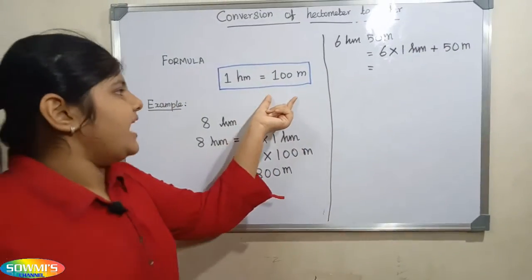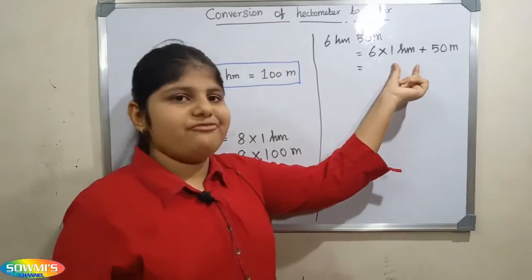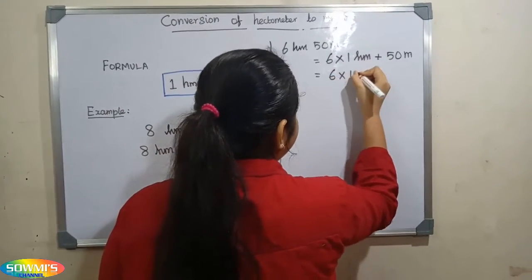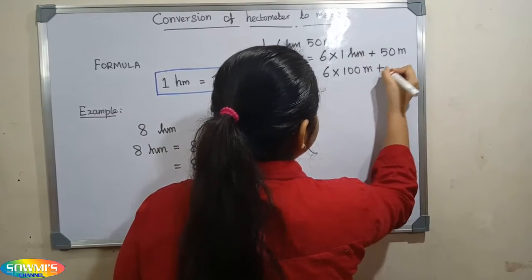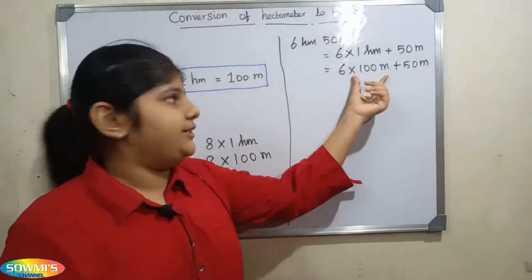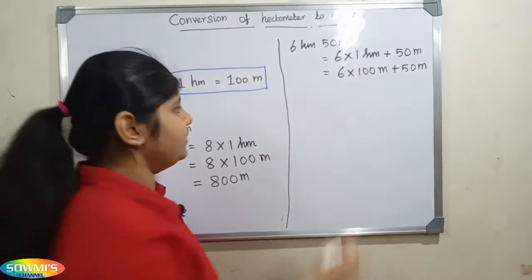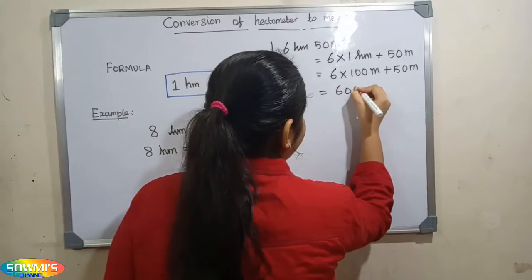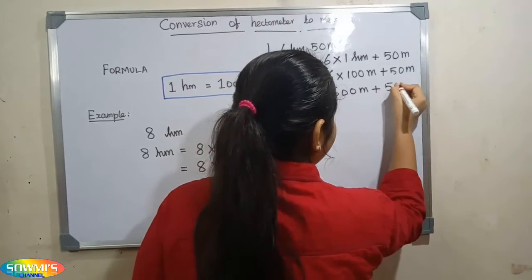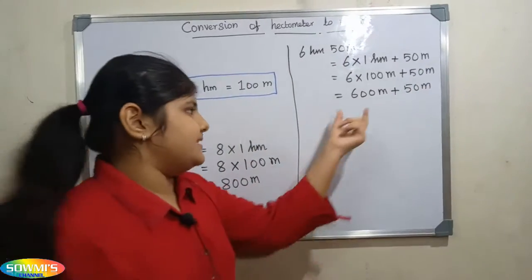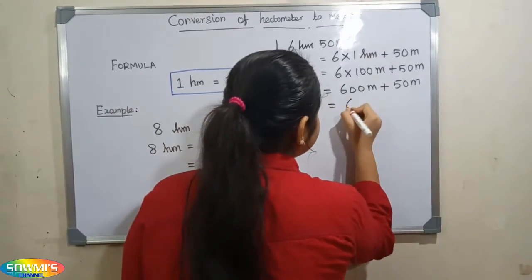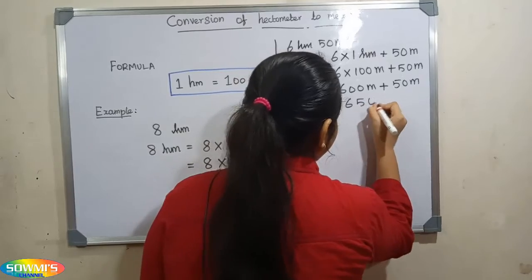Now we have to substitute 100 meter in the place of 1 hectometer. 6 multiplied by 100 meter plus 50 meter. 6 into 100 meter is equal to 600 meter plus 50 meter. 600 meter plus 50 meter is equal to 650 meter.